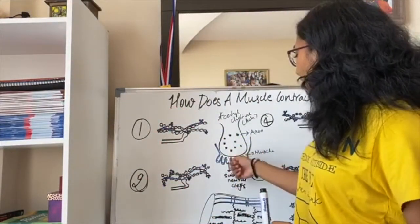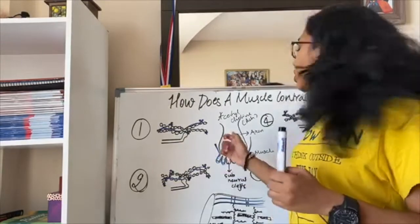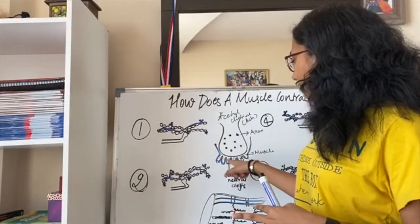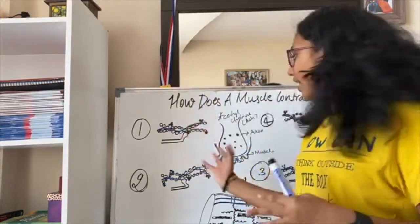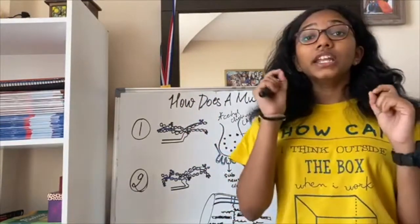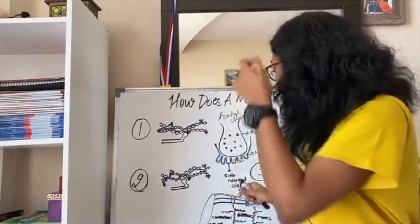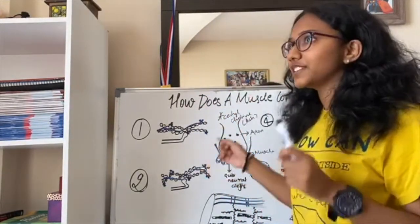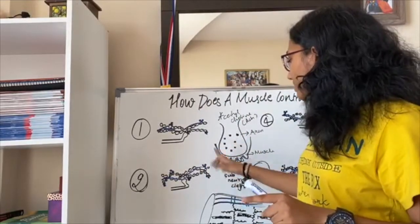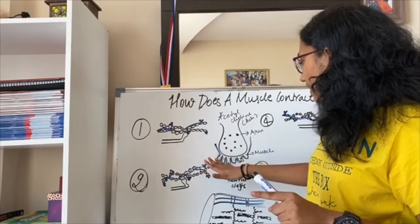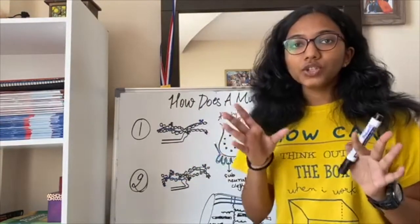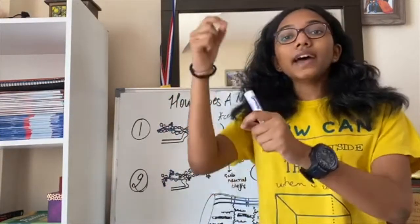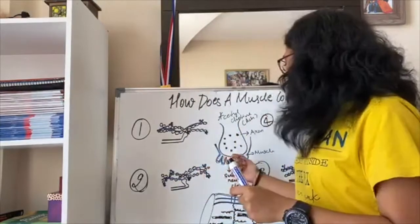And this is the motor end plate. So the acetylcholine receptors are released in the subneural cleft, the space between the neuron and the muscle. Now these acetylcholine neurotransmitters, they bind to the receptors present on the muscle sarcolemma. So when they bind to the receptors present on the muscle sarcolemma, the action potential is transferred to the muscle.